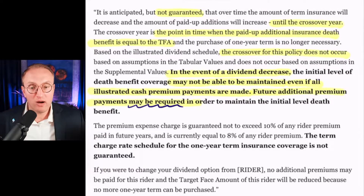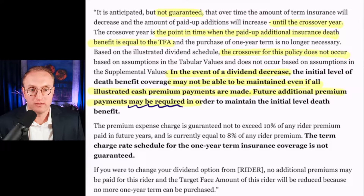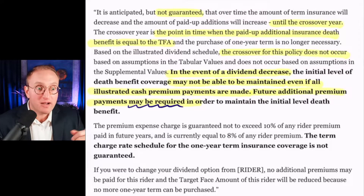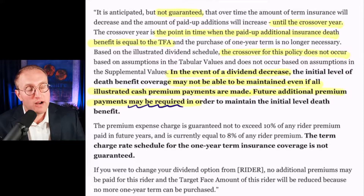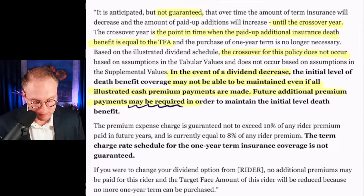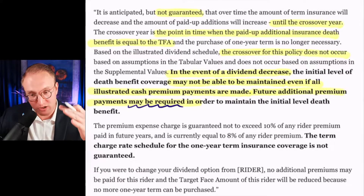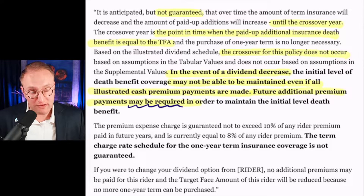Would we want to do that? The initial level of death benefit going down matters because recall the reason for the rider — it's to prevent the MEC from occurring. It's there for a reason. I'm not buying temporary term death benefit just because I want to pay more premium into term. It's there because I want to preserve the non-MEC status. So in the event that the dividend is insufficient to cover the rider premium, I'm going to have to pay more premium to make up for the difference — in order to keep the death benefit of the rider on the policy and maintain the preferable tax treatment of the policy.